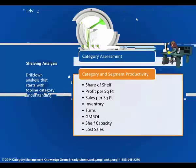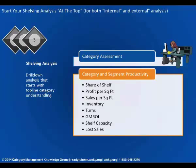Same thing for shelving projects — do the category assessment, reflect on the overall strategies, and then you can do category and segment productivity analysis: share of shelf, profit per square foot, sales per square foot, and so on. There are a lot of different calculations associated with shelving. Anyone in the organization making requests for shelving changes or to add new products, regardless of retailer or supplier, should understand how basic shelf management works and how different components of the shelf work.